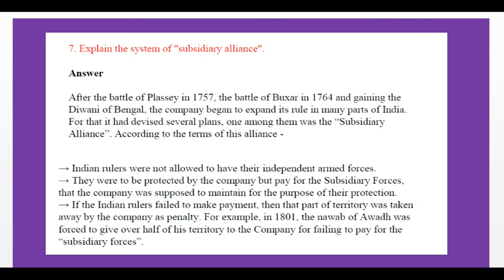What are the terms of subsidiary alliance? First, Indian rulers were not allowed to have their independent armed forces. Second, they were to be protected by the company but had to pay for the subsidiary forces that the company maintained for their protection. If the Indian rulers failed to make payment, then part of their territory was taken away by the company as a penalty.